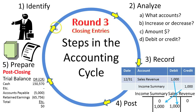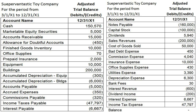Here in round three, we are going to do the closing entries. This video is all about identifying those temporary accounts that need to be closed. If you recall, this is the adjusted trial balance that we used to prepare the financial statements. One key thing you should see is that we still have all revenues, expenses, and dividends on this adjusted trial balance.